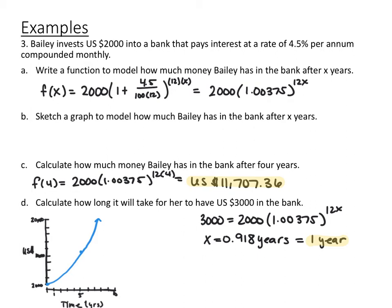To calculate how much Bailey will have after 4 years, plug in x equals 4. You end up with $2,707.36. For part D, to find how long until she has $3,000, set the function equal to 3,000 and find the intersection on the graphing calculator. The result is x equals 0.918 years. Since interest is discrete per month, this is a little over 11 months, so rounding up, after one year she would have $3,000 in her account.